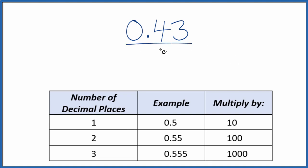Let's start by putting 0.43 over 1. So we're just dividing by 1. We haven't changed the value, but now we have the start of a fraction.